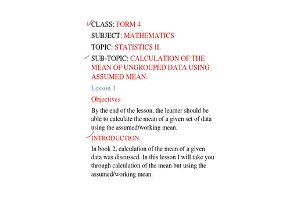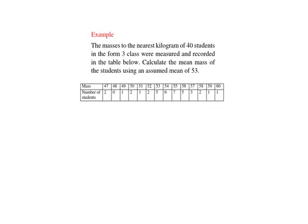You might be asking yourself, where will you get the assumed mean? The assumed mean will be given by the examiner, like in our case here, we have the assumed mean as 53. But in case it is not given, then you take one of the values of x in the set of data to act as the assumed mean.